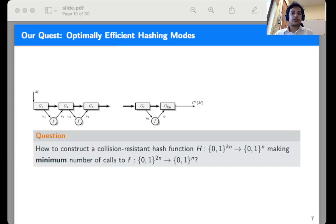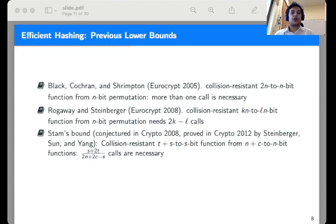In this work, we ask how can we construct the most efficient domain extension algorithm. In concrete terms, we wish to construct a collision-resistant kn to n-bit hash function yet making minimum number of calls to the underlying 2n to n-bit function f. Of course, we are not the first to ask this question.